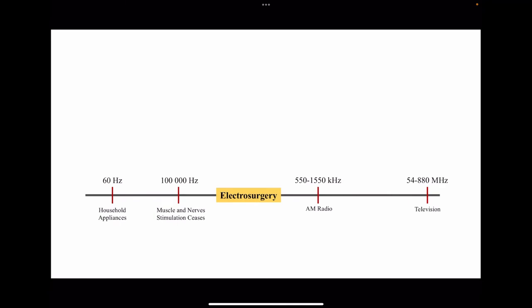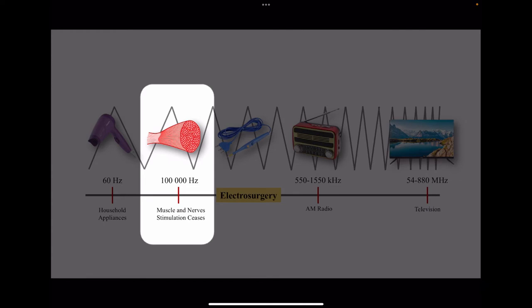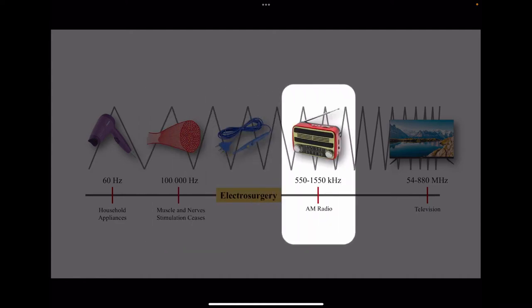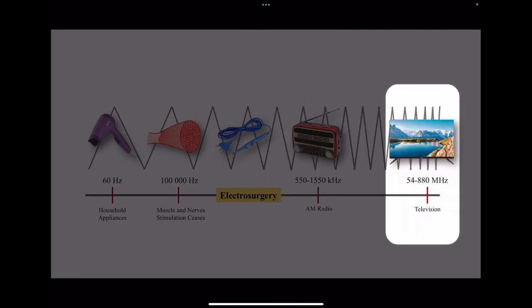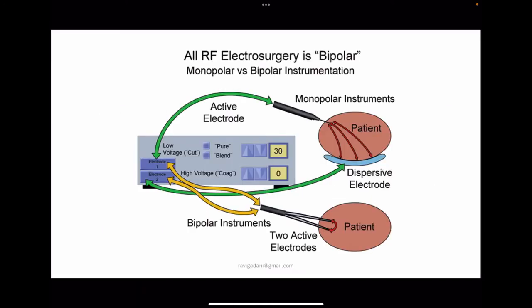On a frequency scale: home appliances work at 50–60 Hz; muscle and nerve stimulation ceases above about 100,000 Hz; AM radio works in the range of 550–1,000 kHz; television works in the megahertz range; and electrosurgery operates somewhere between 350–500 kHz.